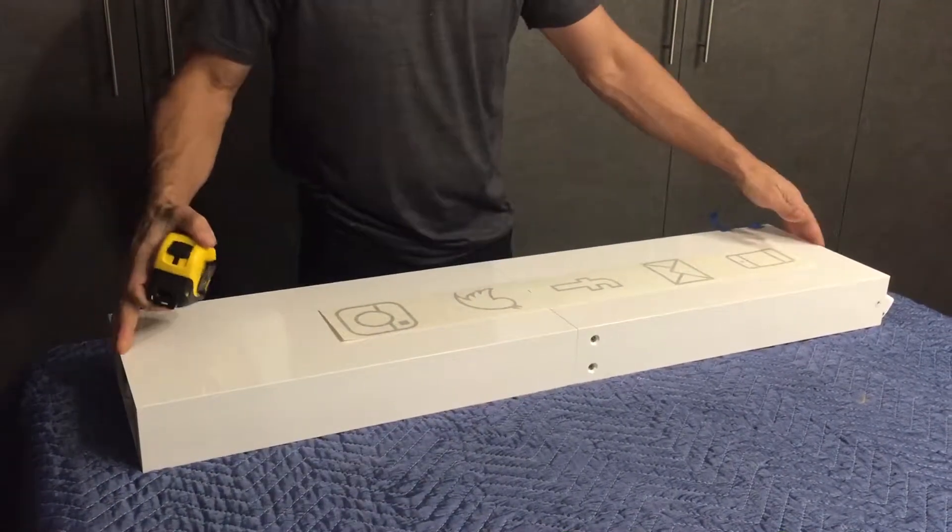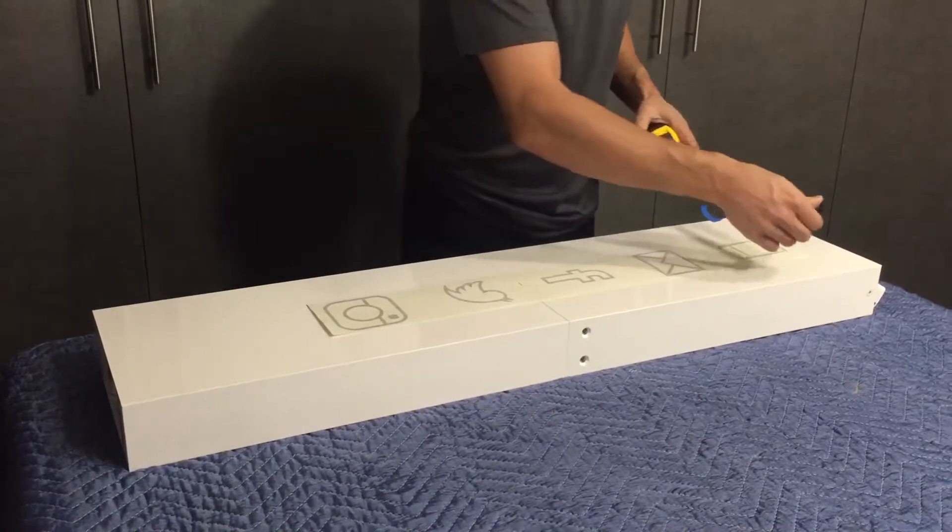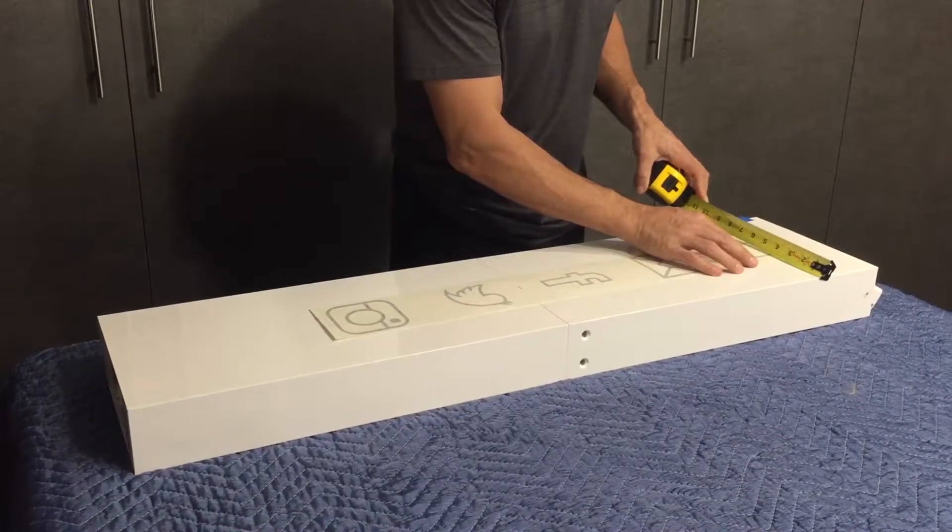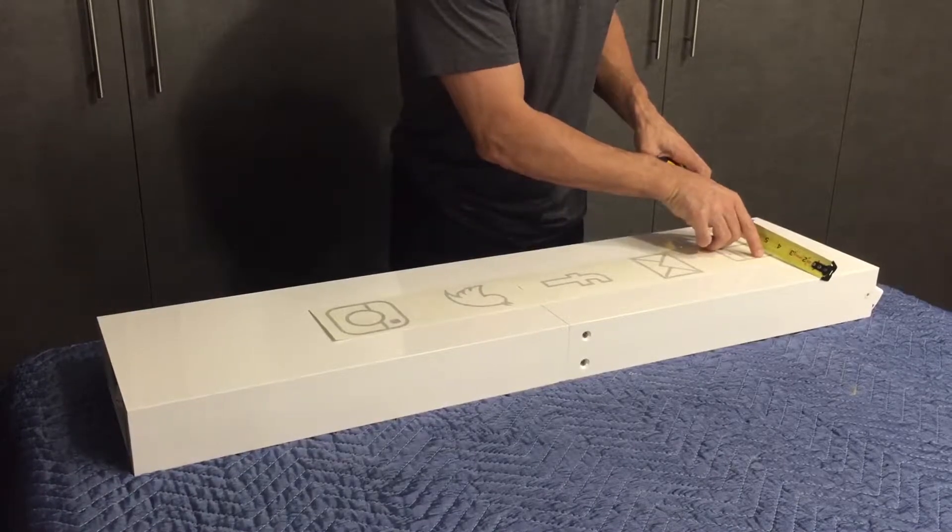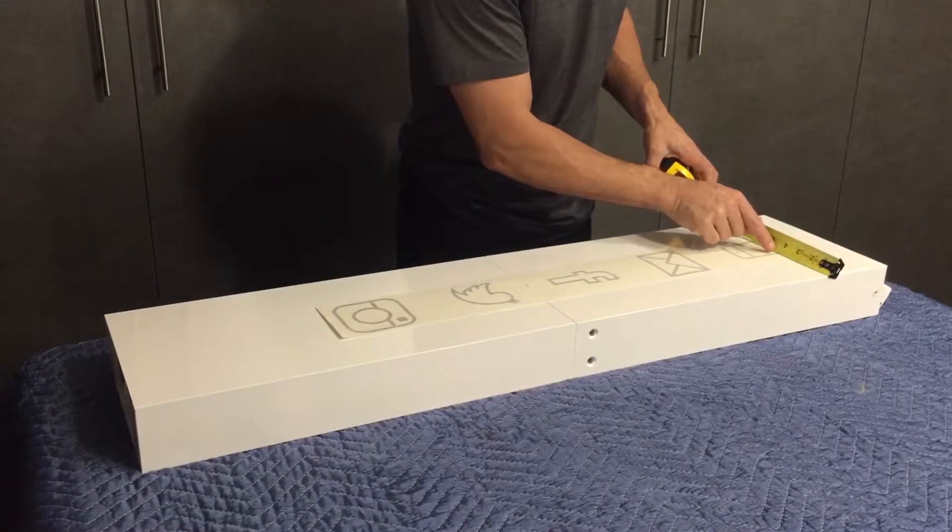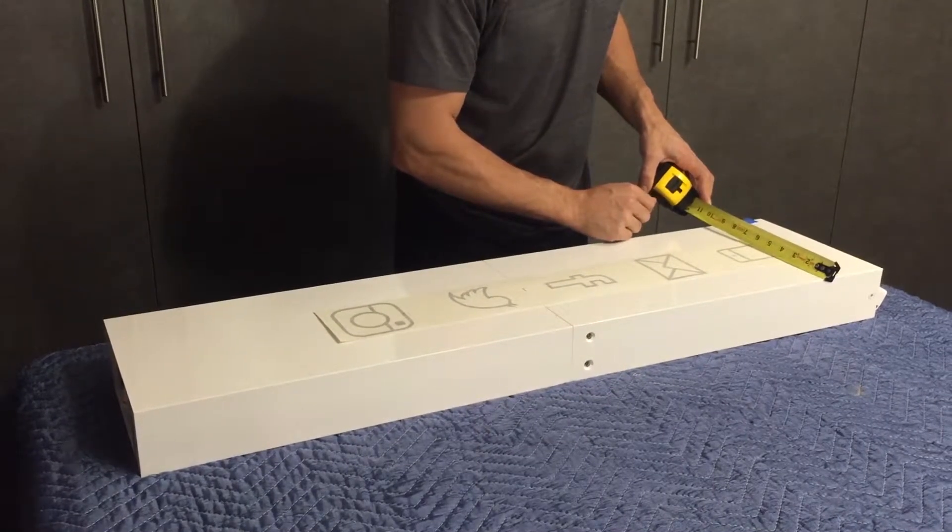We're going to line that up on the seam and then at the top we're going to measure over 3 and 7 eighths. That's from the edge of the kiosk to the edge of the icon, 3 and 7 eighths.